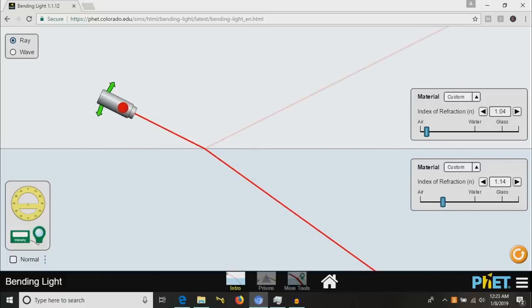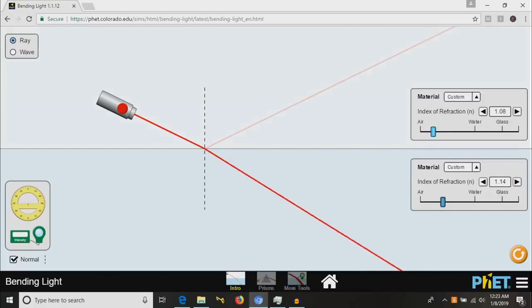More specifically, when going from less dense to more dense at an angle, the light bends toward the normal line, which is an imaginary line perpendicular to the boundary of the two substances. And when going from more dense to less dense, it bends away from the normal line. But the easier way to think about this is that it always bends toward the denser material.